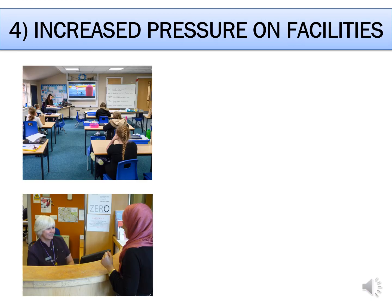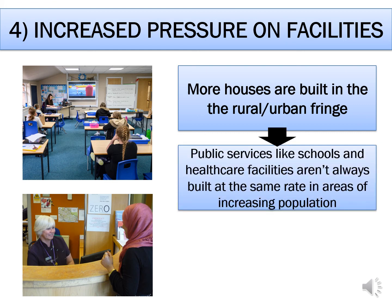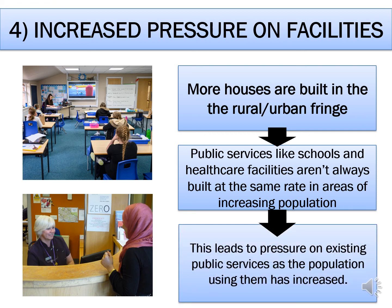Finally, the last impact of urban sprawl is increased pressure on facilities and public services. More houses are being built in the rural-urban fringe — where the town or city meets the countryside — but that doesn't necessarily mean public services like schools and GP surgeries are built at the same time or rate. So an increased population moves into new houses and tries to use the same number of public services, creating greater pressure on those facilities.